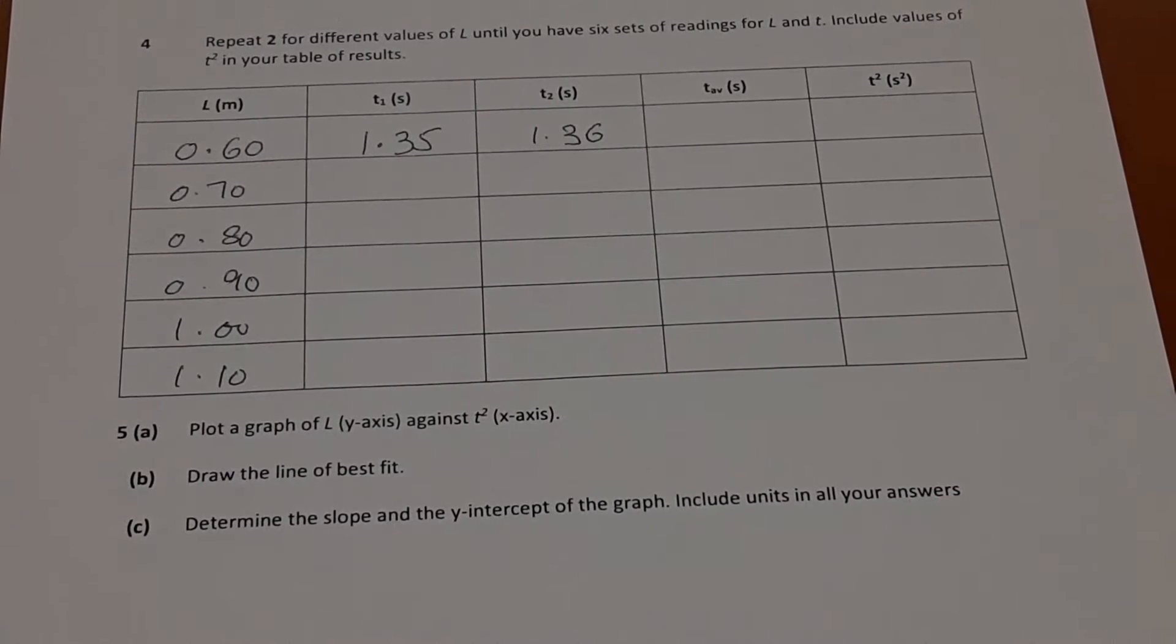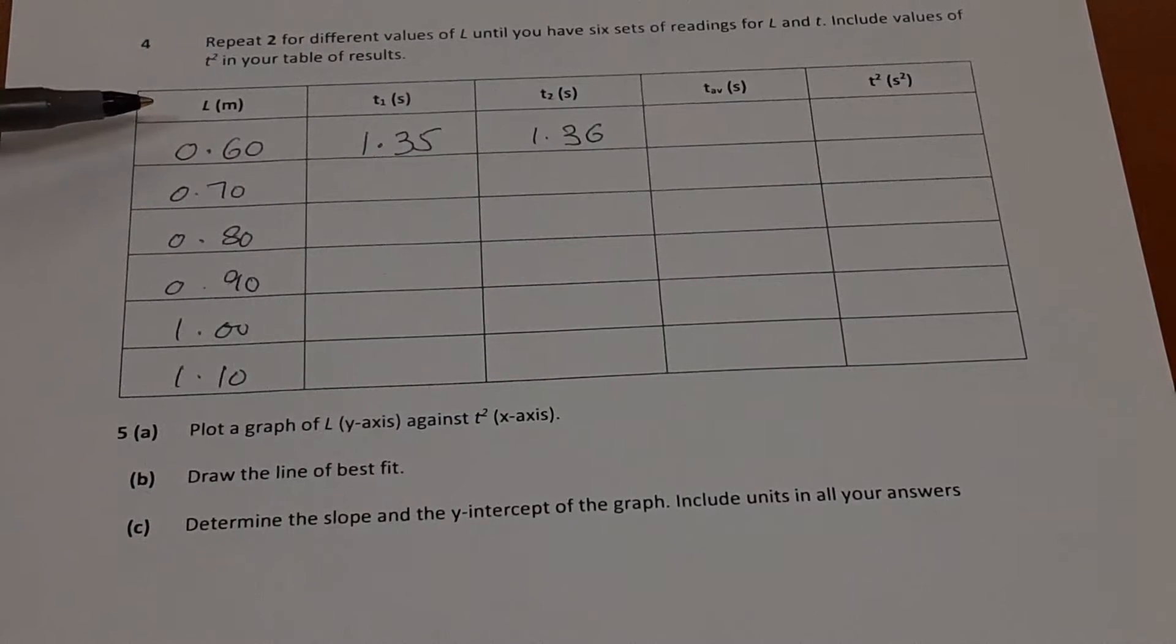So you can see the table here. First thing I've done is in the first column, L. Now this is the independent variable because I can choose what distance the ball needs to travel down the incline. So these are values which I already know. This is L, the independent variable.